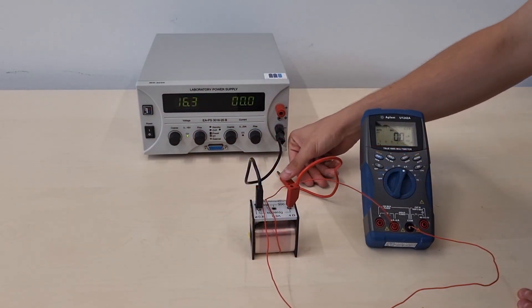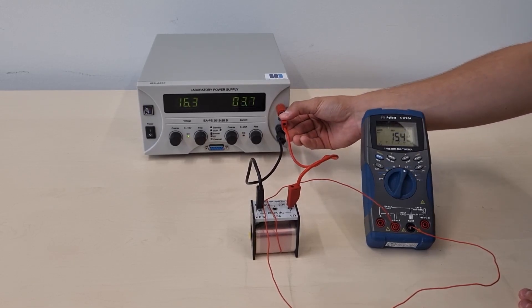As we can see a current of 15.4 microamps is measured. Now we turn off the power supply and look what happens.